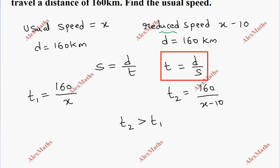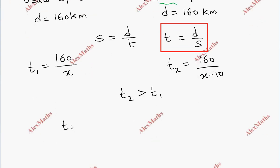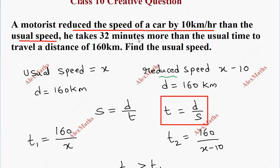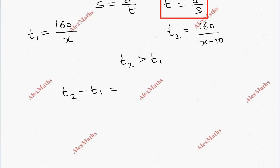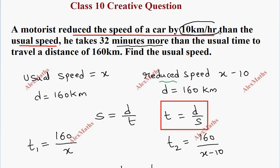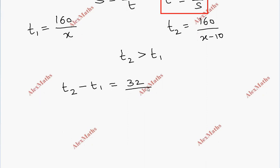The time t2 will be greater than t1. The difference is 32 minutes. We need to convert 32 minutes to hours by dividing by 60. So t2 minus t1 equals 160 by (x minus 10) minus 160 by x equals 32 by 60.